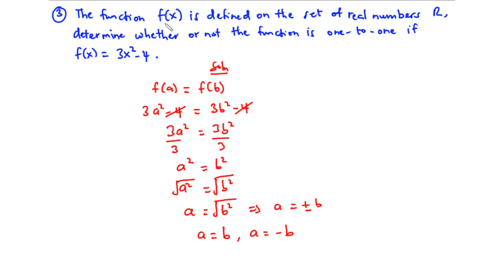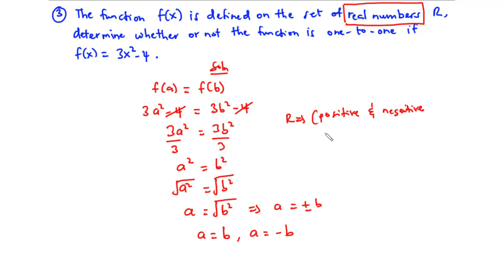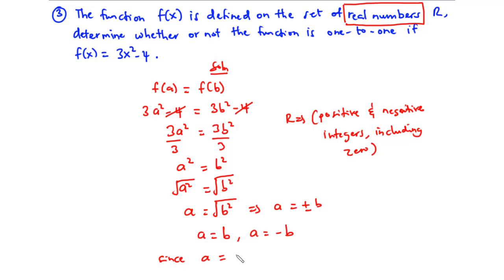From the question, the function f(x) is defined on the set of real numbers. Real numbers are positive and negative integers including zero. So positive and negative numbers including zero are part of the domain. Since a = ±b, we consider both equations. Therefore the function f(x) is not one-to-one.